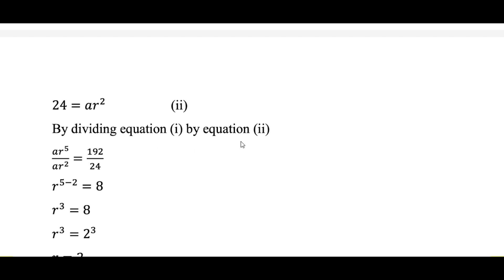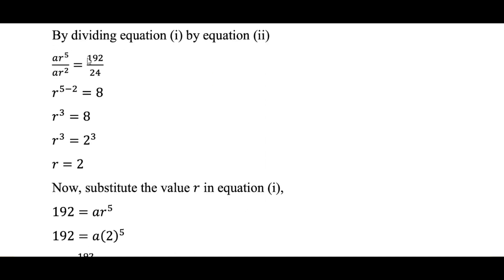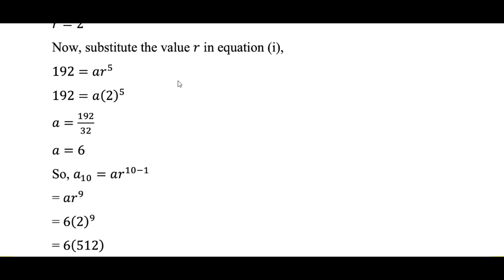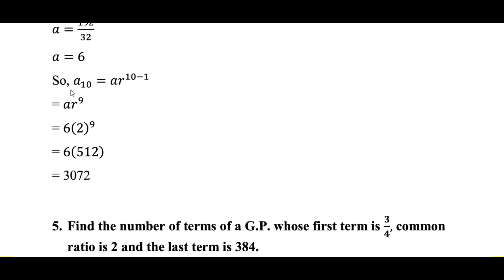Dividing equation 1 by equation 2: AR to the power 5 divided by AR squared equals 192 by 24. After simplification, R equals 2. Substituting R back into equation 1: 192 equals A times 2 to the power 5, giving A equals 6. Therefore A10 equals A times R to the power 9. Substituting A and R gives 3072.